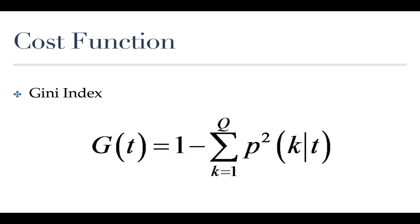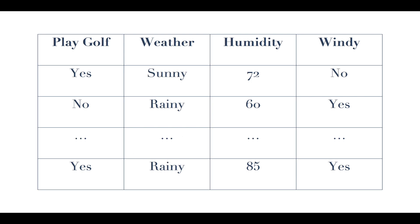We're going to use the example of playing a sport outside determined by the weather. The common one used when talking about random forests is golfing and weather — usually you don't like to golf in the rain or when it's really windy. So we want to determine the optimal conditions for a golfer, or what is the likelihood that someone will golf given some weather condition. We can collect data about golfers and their weather information, and I've created a simple representation of this in a graph.